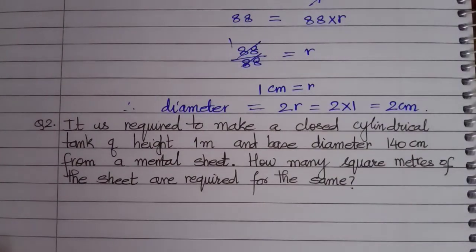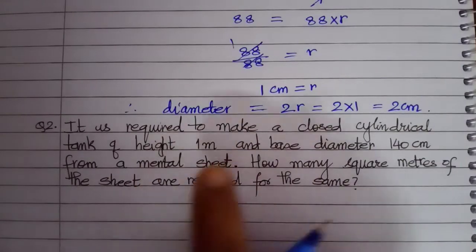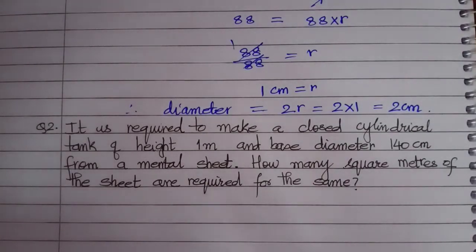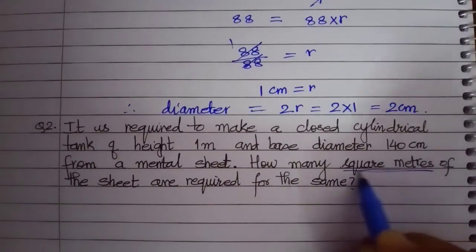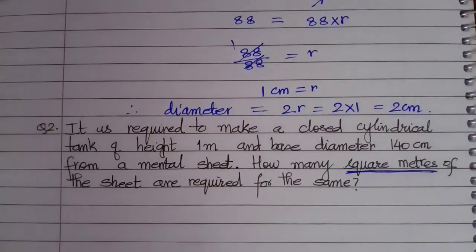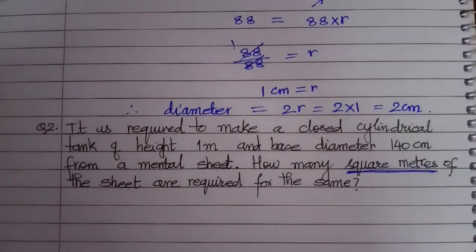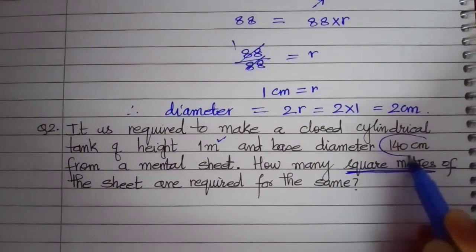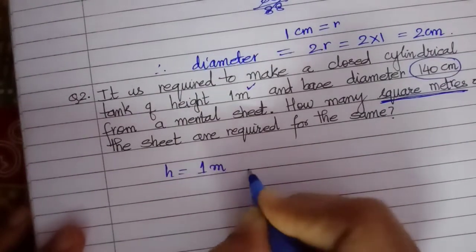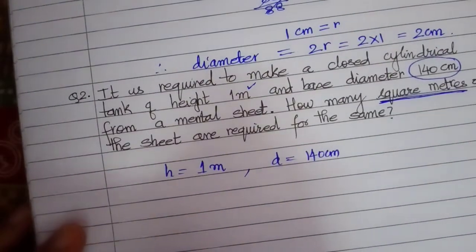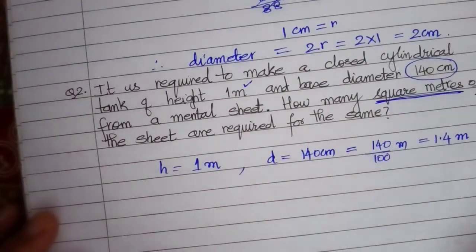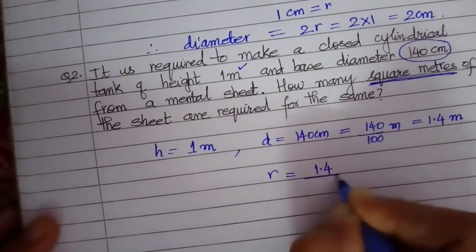Second question. It is required to make a closed cylindrical tank of height 1 meter and base diameter 140 cm from a metal sheet. You have to make a closed cylindrical tank. How many square meters of the sheet is required for the same? You got to find out whether all units are the same. Conversion is needed. This is in meters, no problem. I have to change this which is in centimeters. Height is 1 meter. Diameter is 140 cm, that means it is 140 by 100 meters, that is 1.4 meter. What will be the radius? 1.4 by 2 meters will be the radius.